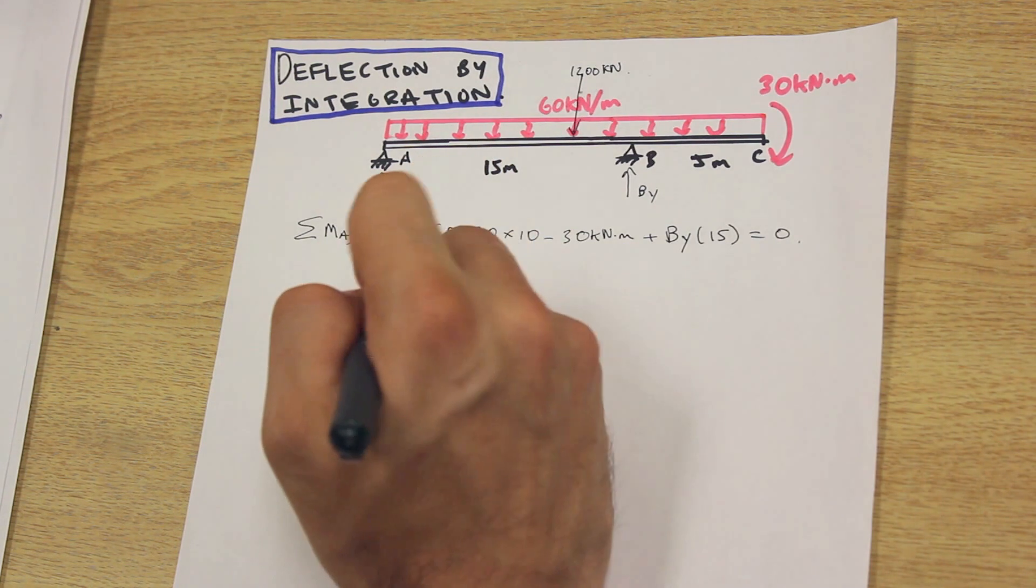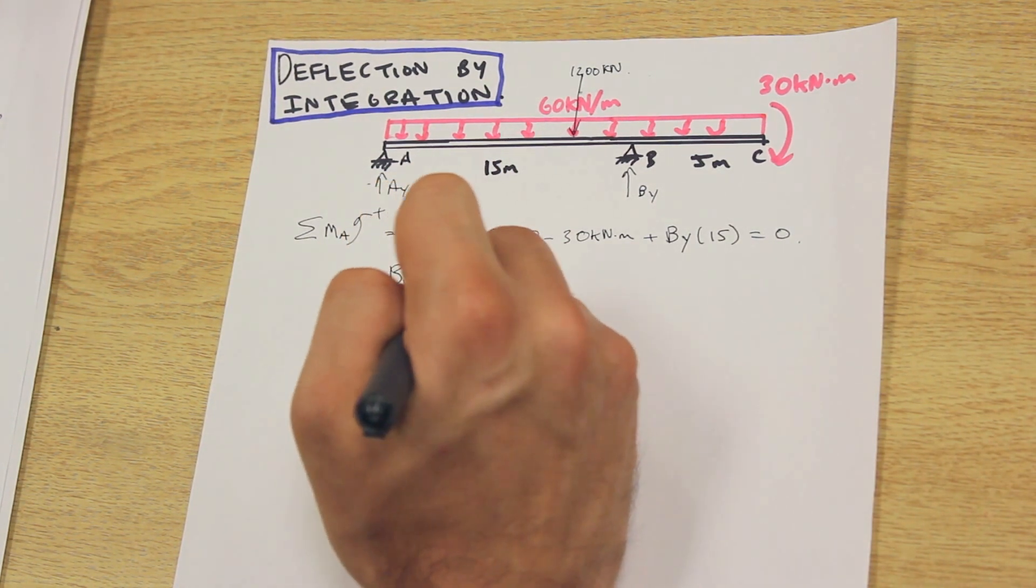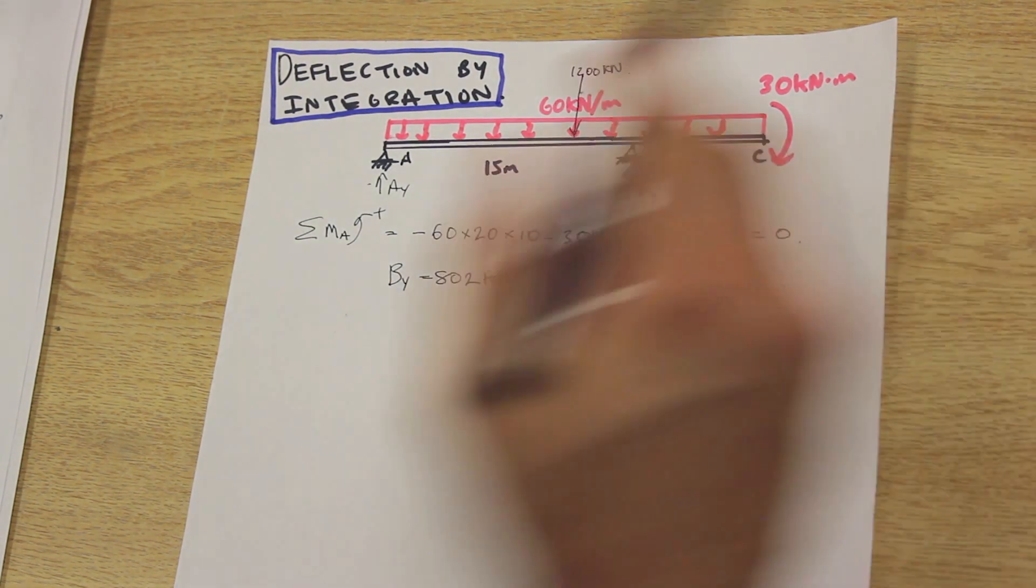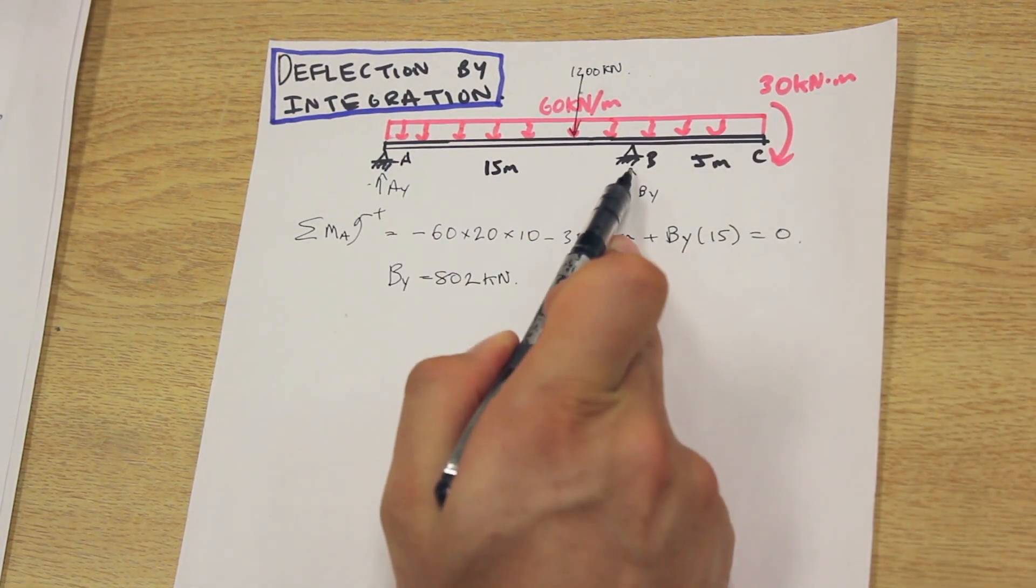If we calculate that out, we're going to get a value of 802 kilonewtons upwards. That means the direction that we assumed, up, is correct.